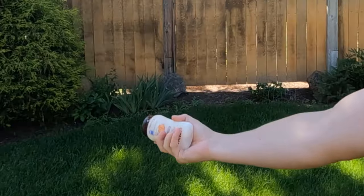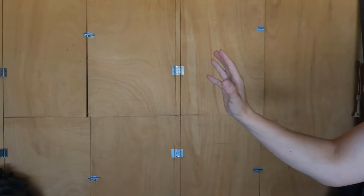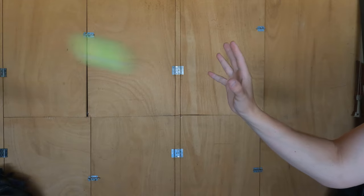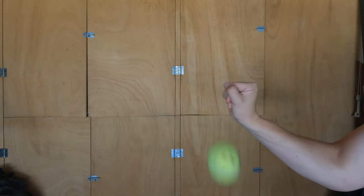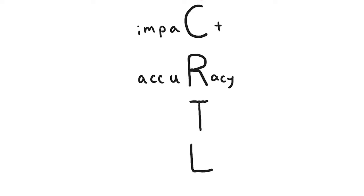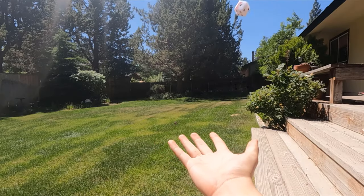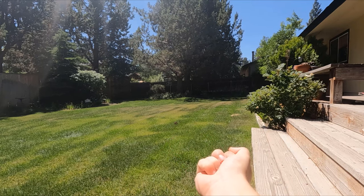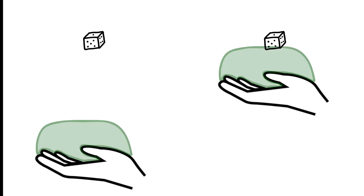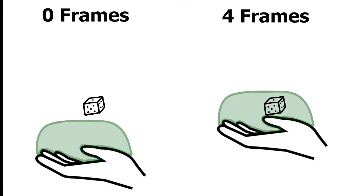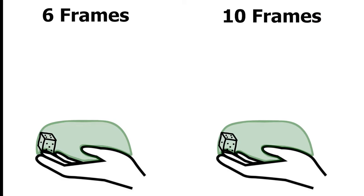Even if the object won't shatter and you are spot on with your hand placement, distributing the force is still important because it helps prevent the object from bouncing out of your hand. This leads to the third reason why cradling is important, which is timing. For any given object, there's only so much time to close your fist and successfully lock on. Moving with the object increases this window. In this example, the die was in the successful catch zone shown in green for 10 frames while moving with it, versus only 6 frames without.